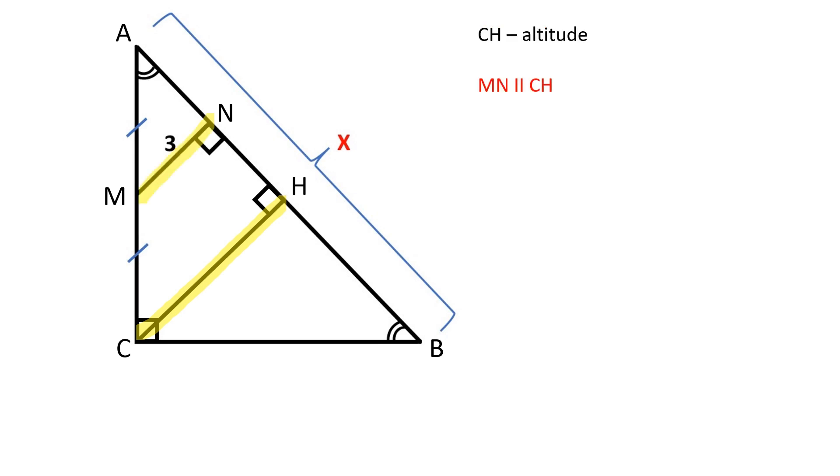MN is parallel to CH because angle MNA equals angle CHA. MN is a mid-segment of triangle AHC because AM equals MC and MN is parallel to CH.